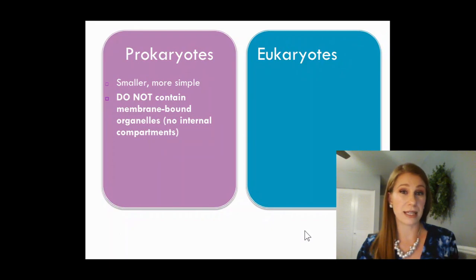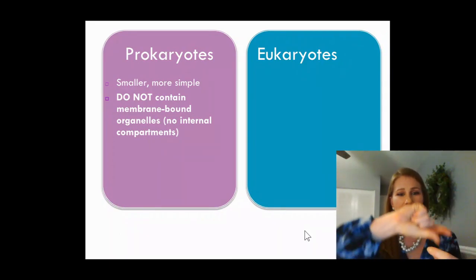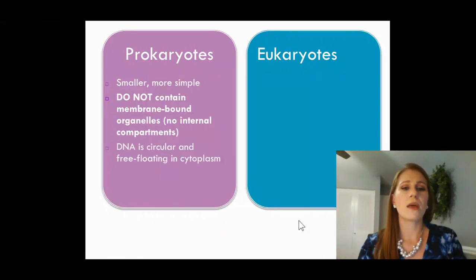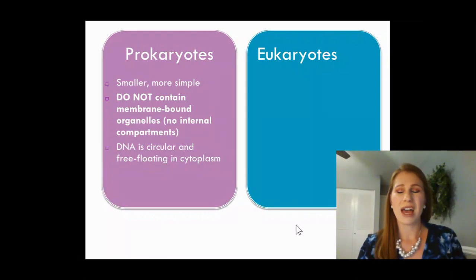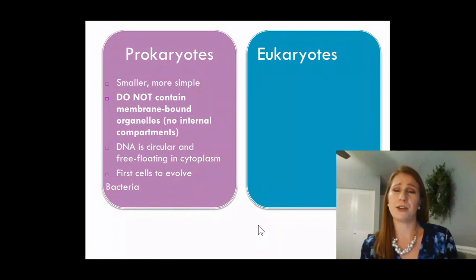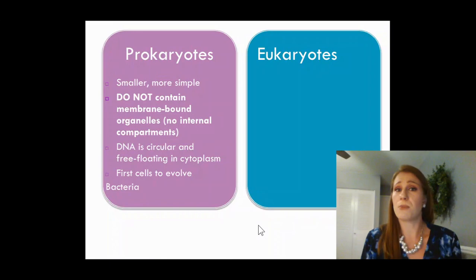Membrane-bound organelles would be things like mitochondria that have that internal compartment, that kind of wiggly structure inside of them. Their DNA is circular and it free floats in the cytoplasm. It does not have a nice nucleus around it to protect it. It's just floating. And those were considered the first cells to evolve. They're simpler, which makes sense. And their other name is bacteria. If someone says bacteria, you can think, oh, that's a prokaryote. And if you hear your teacher say prokaryote, they also mean bacteria. They are synonymous or the same.